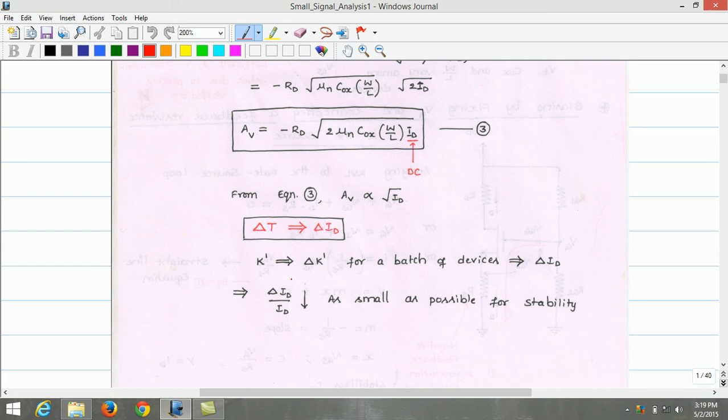Therefore, the common condition or general condition to arrive at for the bias stability to be smaller is delta Id by Id should be as small as possible, where delta Id is the change in drain current due to the variation in K dash and temperature. Id is the required drain current or desired drain current flowing in the amplifier circuit. Therefore, delta Id by Id, if it is smaller, then we can say that the amplifier is stable.